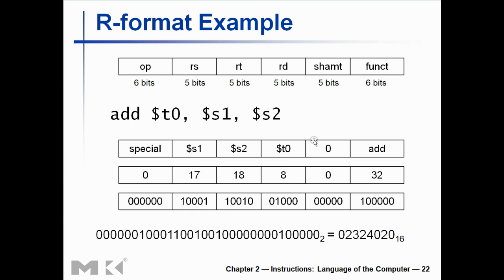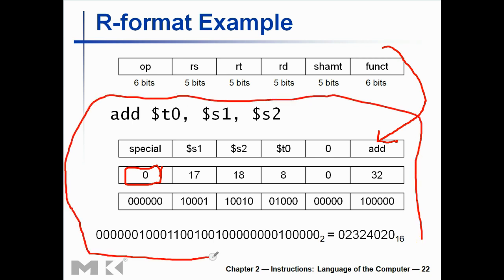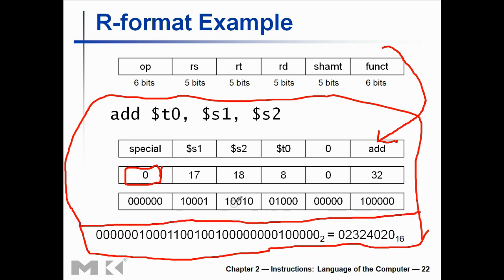Let's see an example. You have s1, s2, and you are going to save it on t0. The values are 17, 18, 8, 0, 32. The function is add — you write add. Op code is always 0 for R type. If you convert it into binary, this is really deep computer stuff, but if you've followed along you probably understand it — this is actually the compiled language representation.